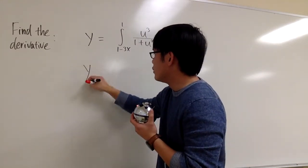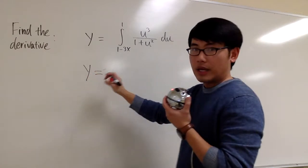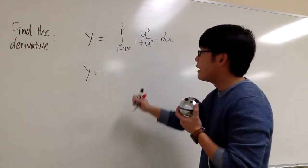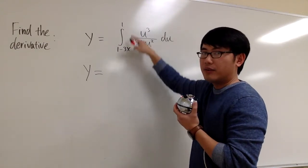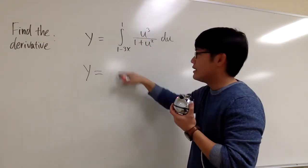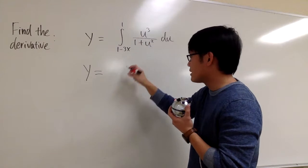So I will just rewrite this. I'm going to switch the 1 and the 1 minus 3x. I have to have the number on the bottom and then the 1 minus 3x on the top.